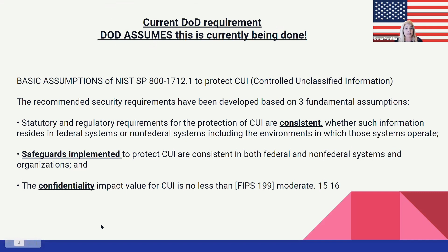The Department of Defense is requiring this and assuming it's currently being done. The basic assumption of SP 800-171 is to protect CUI — controlled unclassified information. There are three fundamental assumptions: that statutory and regulatory requirements for the protection of CUI are consistent whether in federal or non-federal systems; that safeguards implemented are consistent in both federal and non-federal systems; and that the confidentiality impact value of CUI is no less than FIPS 199. So: safeguards in place, followed consistently, and CUI kept confidential.